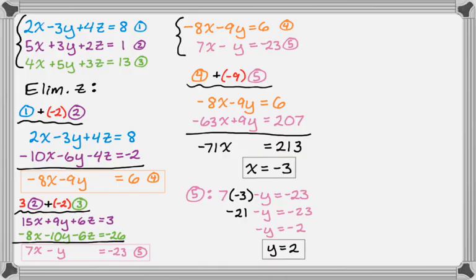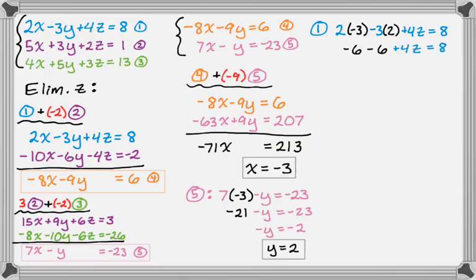I go back to one of the three original equations — I'll use equation 1 — and substitute in x equals negative 3 and y equals 2. So it's 2 times negative 3 minus 3 times 2 plus 4z equals 8. Cleaning that up and adding 12 to both sides, then dividing by 4, I get z equals 5. So now I know x is negative 3, y is 2, and z is 5.